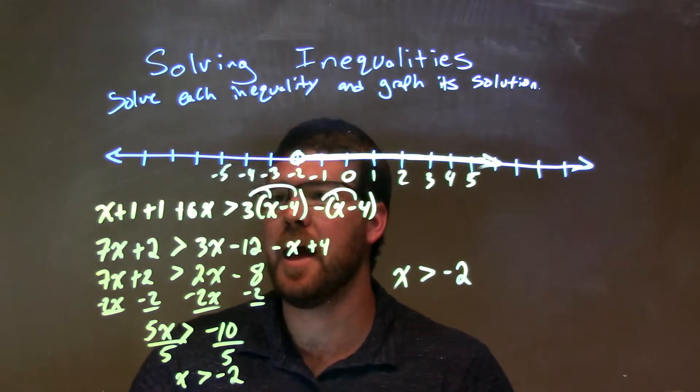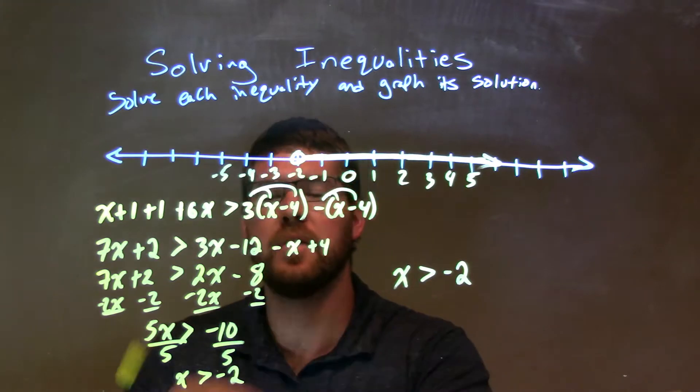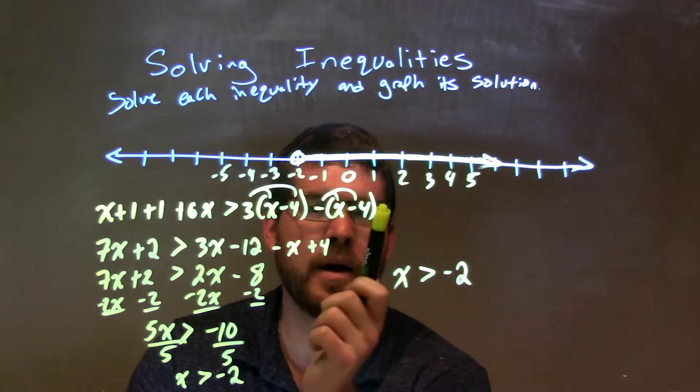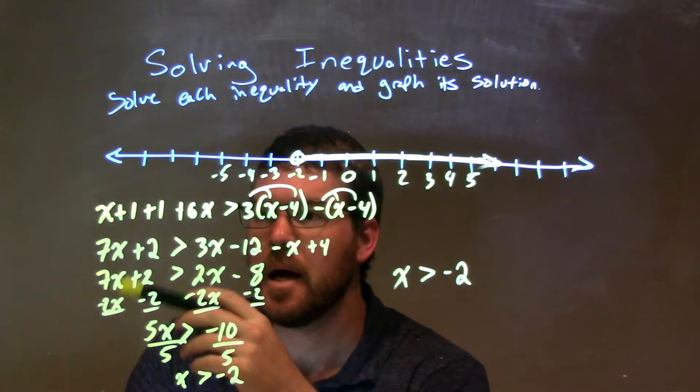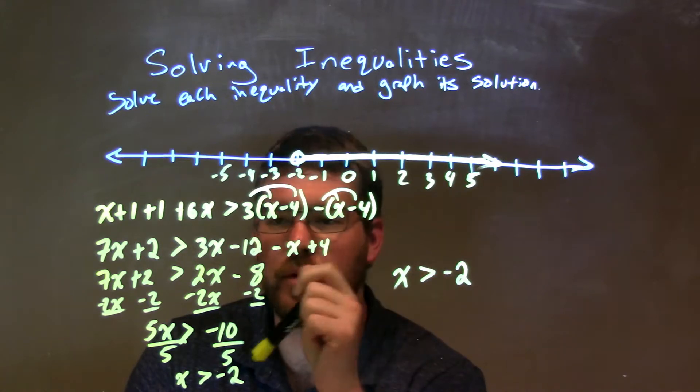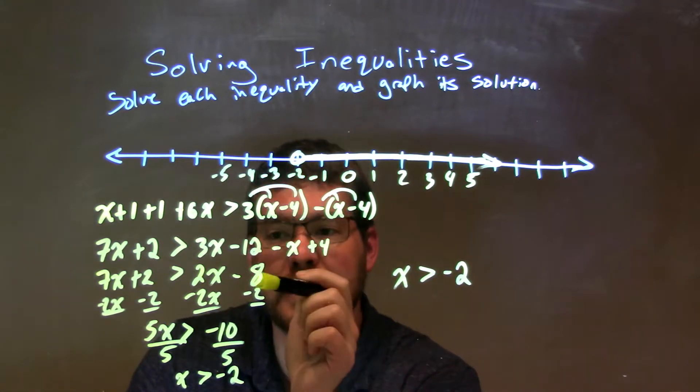So, let's recap. We're given x plus 1 plus 1 plus 6x is greater than 3 times the parentheses x minus 4, and then the next parentheses minus x plus 1. I simplified the left-hand side, and I distributed it on the right, both of these parentheses. Then, from there, I simplified the right-hand side.